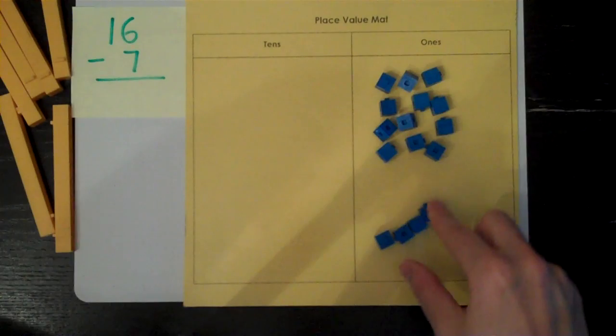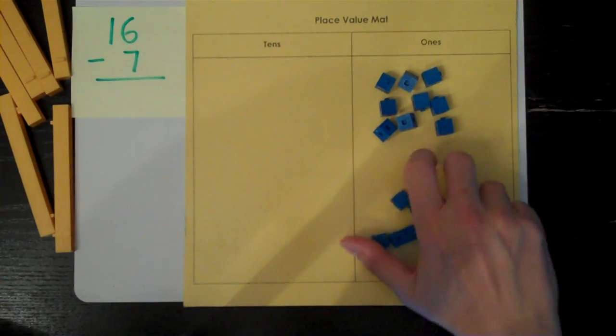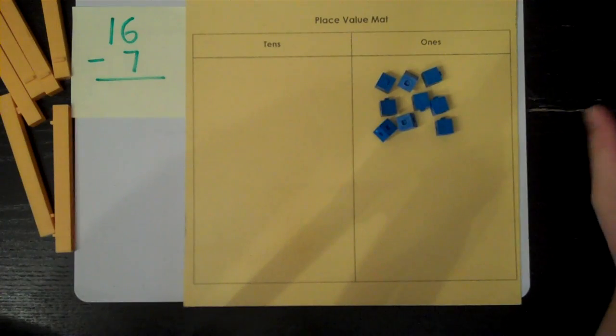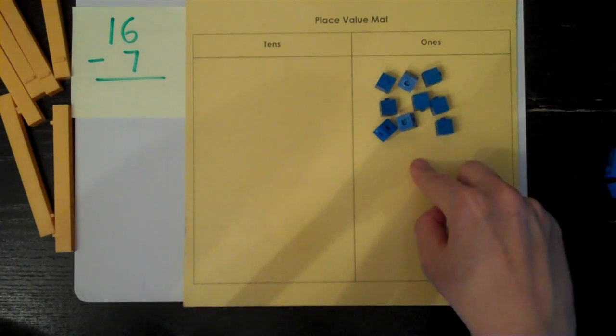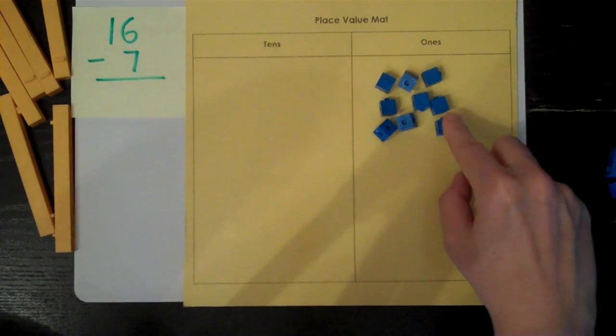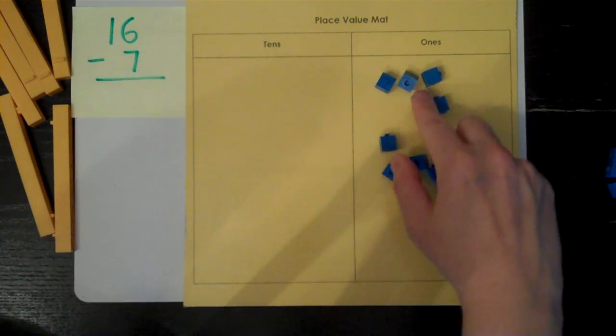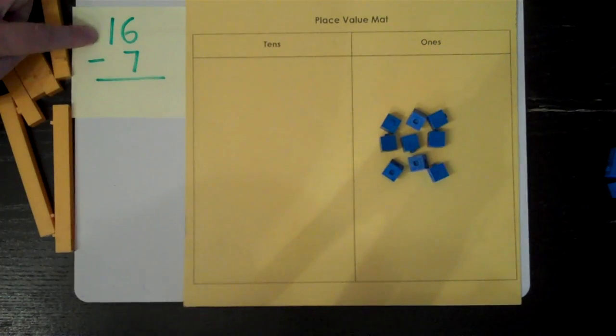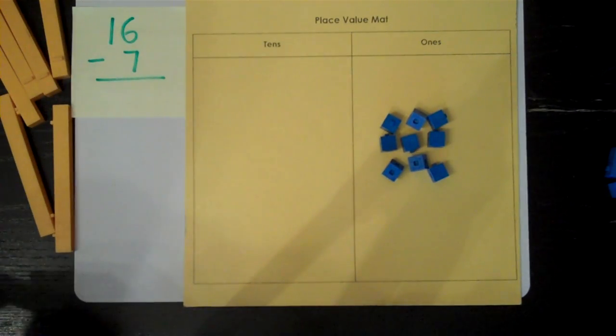One, two, three, four, five, six, seven. I take them completely off my mat. Now I should have my difference, the answer. One, two, three, four, five, six, seven, eight, nine. Sixteen take away seven is nine.